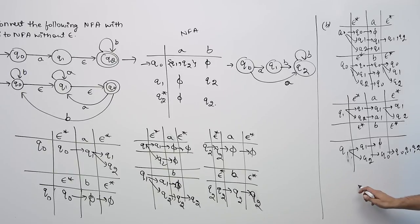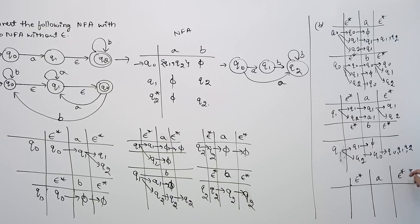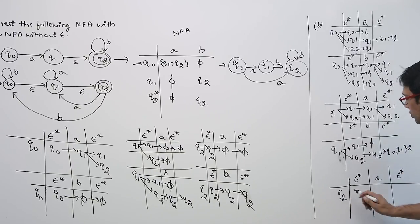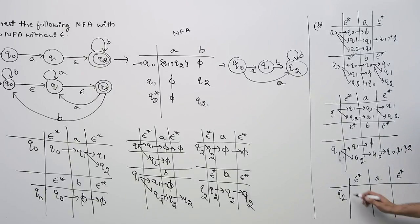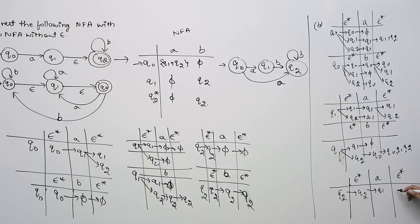For state Q2: epsilon closure of Q2 is Q2 itself. On seeing symbol A, we are going to Q1. So epsilon closure of Q1 is {Q1, Q2}.